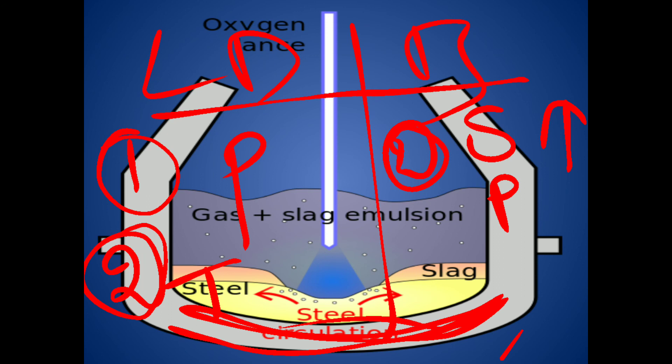Third difference: the steel produced in the LD converter has a low nitrogen content compared to the Bessemer process. Also, the LD process is much faster — completing within 15 to 25 minutes — whereas the Bessemer process takes more time.